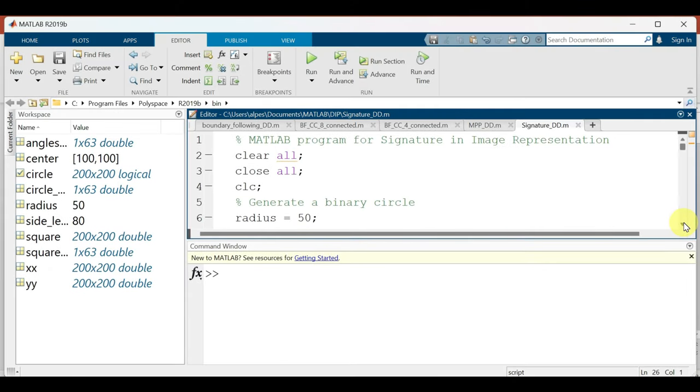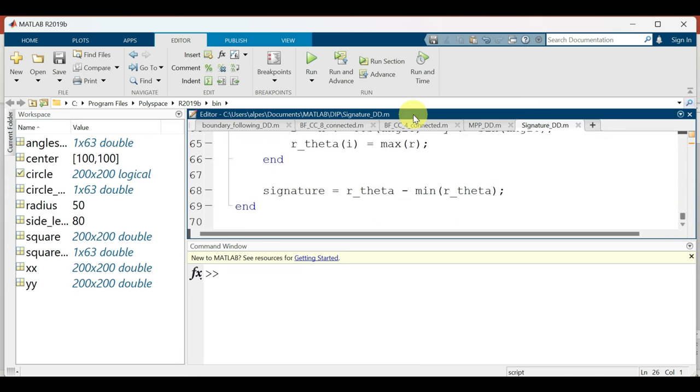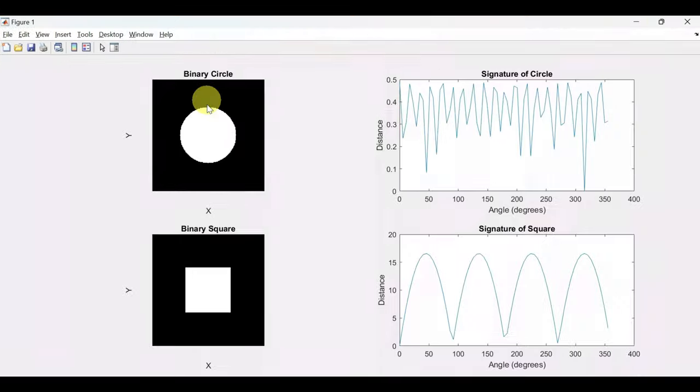This program shows signature for a binary circle and square. Let us run the program and see the output. So here for this circle the signature is coming like this and actually it is a straight line only but the variations in between 0 to 0.5 are plotted over here because the image is a binary image. There will be small variations which are plotted here and for the square the signature comes out to be like this.